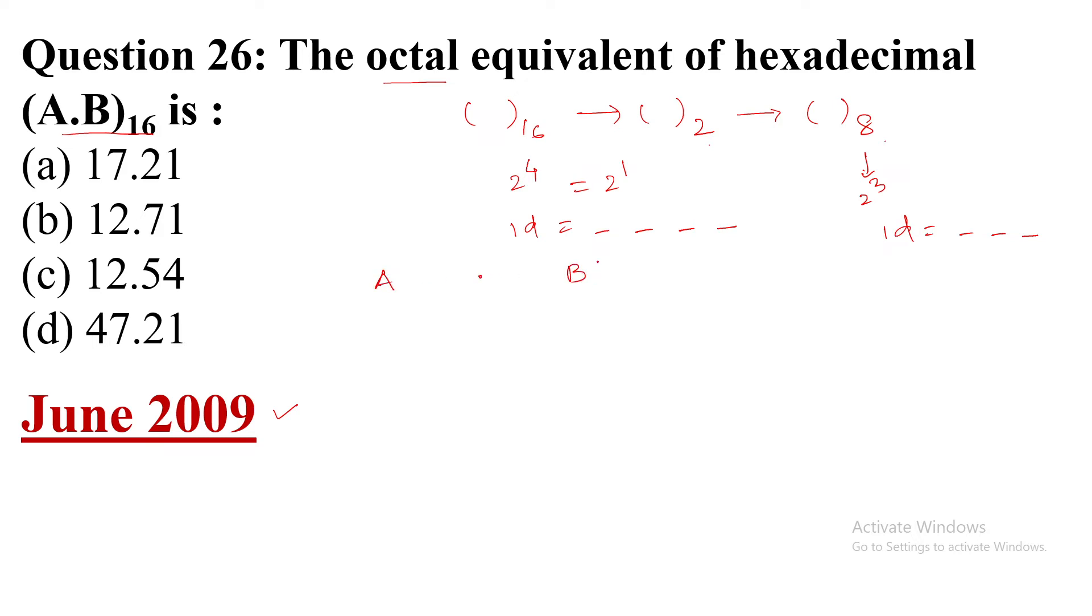Now I am writing A.B. This is hexadecimal, so one digit of hexadecimal means four bits of binary. We will write the power notations of 2: 8, 4, 2, 1 for four bits, repeated for each digit. A represents 10 in hexadecimal and B represents 11. So 8 plus 2 is 10, and other two places put 0. Now 8 plus 2 plus 1 is 11.